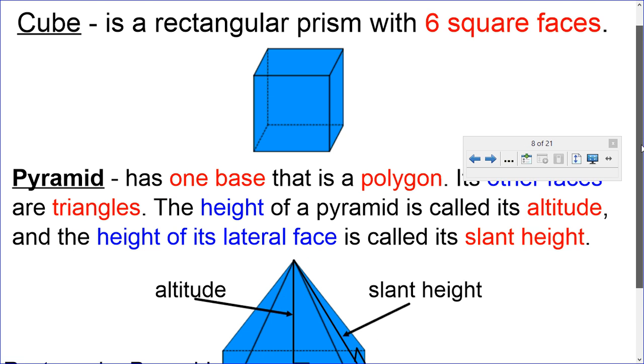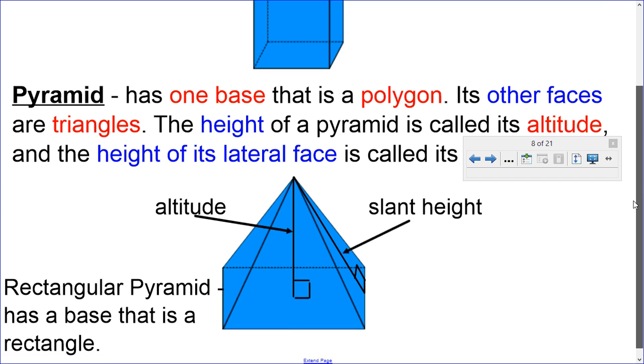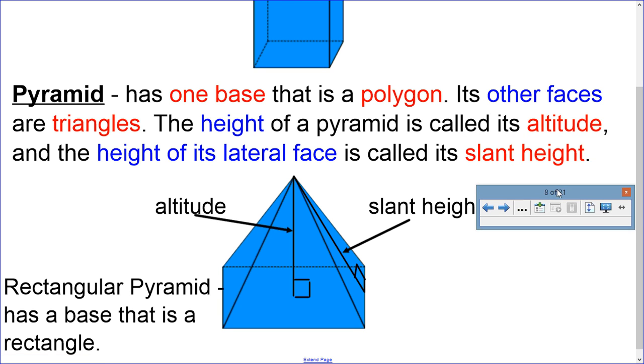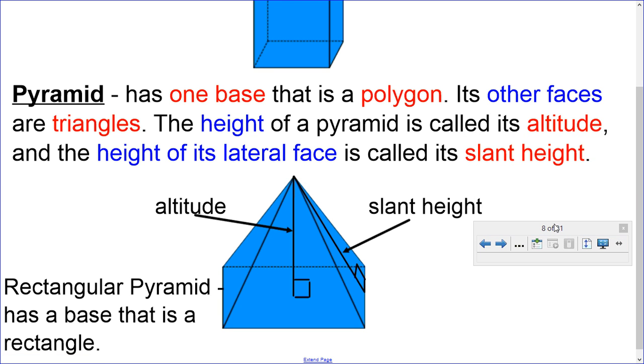Here's another three-dimensional shape, a pyramid. It has one base that is a polygon. So one of the bases is the bottom. It's a polygon. It could be a square, rectangle, pentagon. I've seen a lot of different bases for the pyramid. The other faces, though, are triangles.